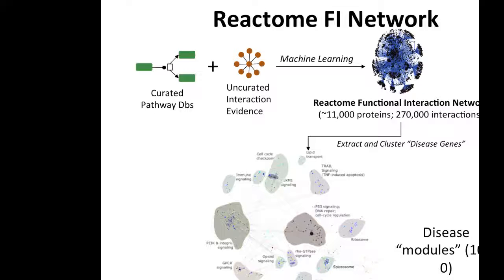Here's an example from the Reactome Functional Interaction Cytoscape app, which Robin will lead you through. This app uses a network built from interactions extracted from curated pathway databases — Reactome plus KEGG and several others — plus a large number of uncurated interaction networks. We've built what we call the Reactome Functional Interaction Network, consisting of 11,000 proteins and 270,000 interactions. The app lets you upload a list of your genes, does name translation and ID identification, and extracts from this big network the subnetworks involved by the genes you uploaded, then does clustering to turn hundreds of genes typically into 10 to 30 high-related disease modules.